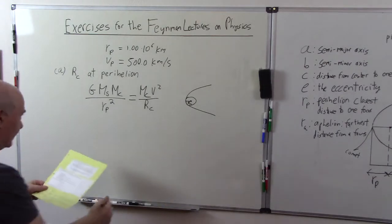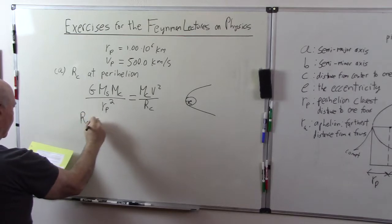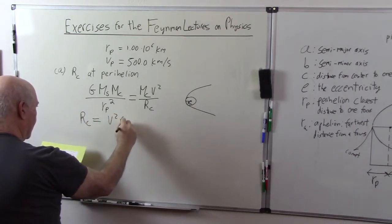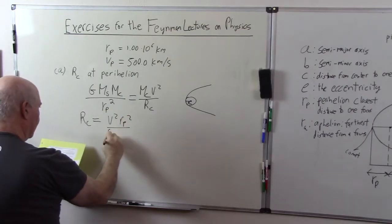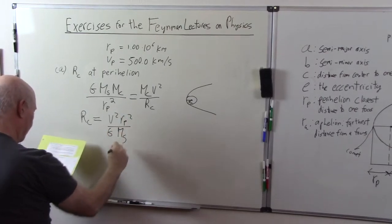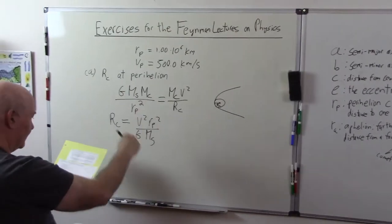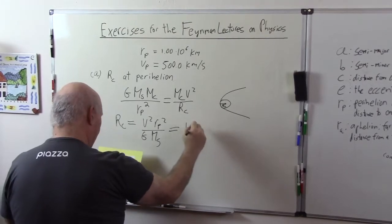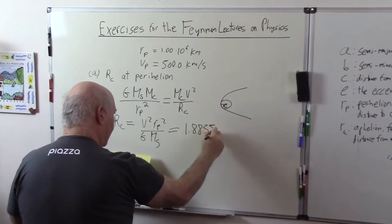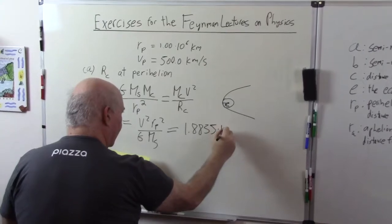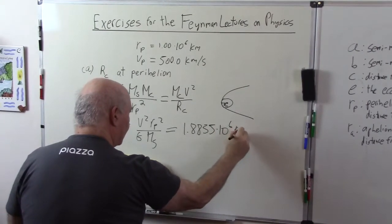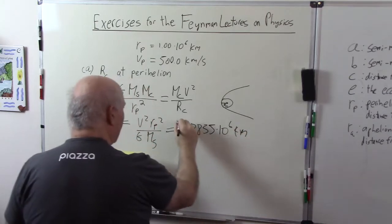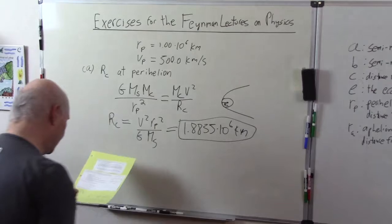From this we can solve easily. RC is equal to V squared RP squared over G mass of the sun. Plugging in numbers, I won't bore you with all that, you're going to get 1.8835 times 10 to the 6th kilometers. That's the answer to part A.